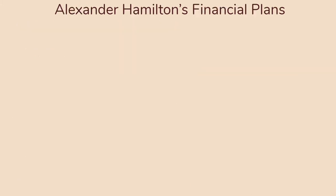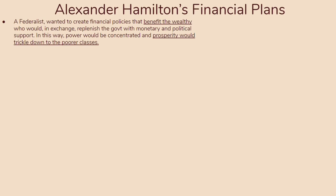During Washington's administration, Alexander Hamilton, the Secretary of the Treasury, comes up with a lot of financial plans. As a Federalist, he wants to create financial policies that benefit the wealthy, who would in exchange replenish the government with monetary and political support. In this way, power would be concentrated at the top — the top 1% — and he believed prosperity would trickle down to the poorer classes. This trickle-down effect is a sentiment that will continue to be relevant for decades.